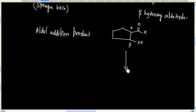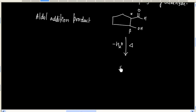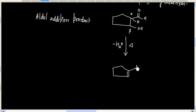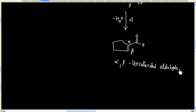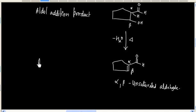Now if I heat this addition product, it will be dehydrated easily by loss of one molecule of water. This hydrogen and this OH group get eliminated — it will be dehydrated. And finally we will have an alpha-beta unsaturated aldehyde. So this is the aldol condensation product.